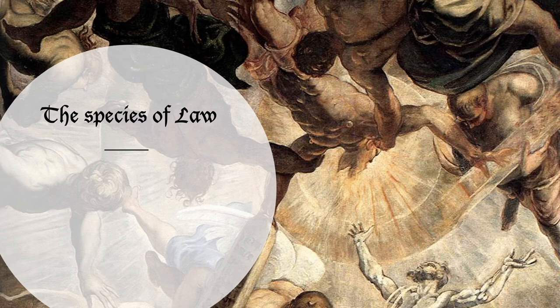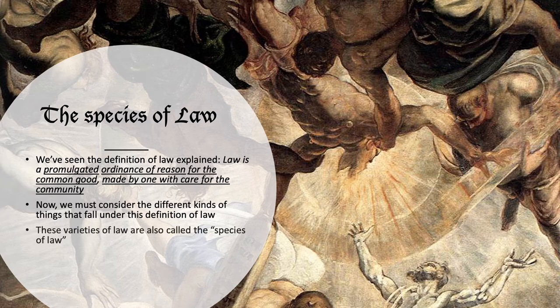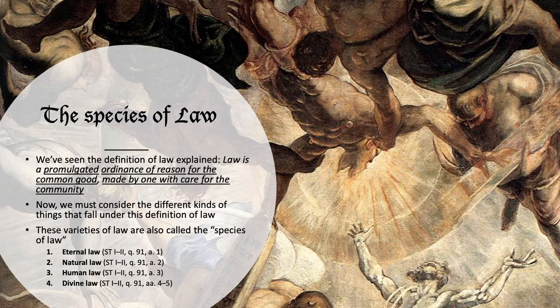At this point, we've explained the definition of law: law is a promulgated ordinance of reason for the common good, made by one with care for the community. Now we must consider the different kinds of things that fall under this definition of law. There are going to be several varieties or species of law, and we are going to explain what each of these kinds of law are and how they meet the definition of law.